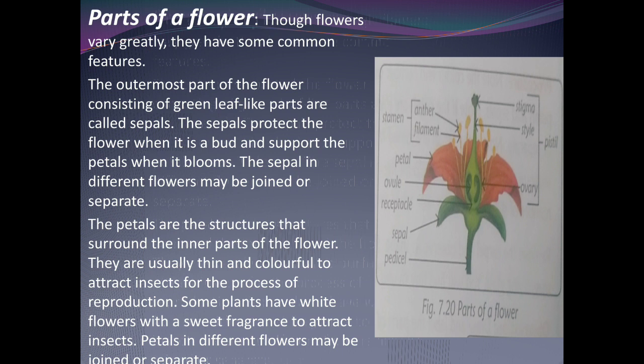The petals are the structures that surround the inner part of a flower. They are usually thin and colorful to attract insects for the process of reproduction. Some plants have white flowers with sweet fragrances to attract insects. Any flower's petals can be white, orange, or other colors. The petals in different flowers may be joined or separate.